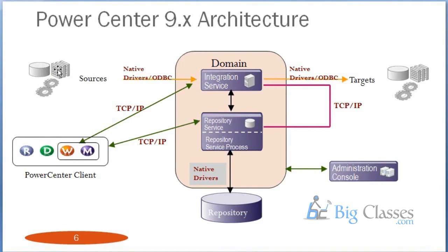For example, if you have an employee table in the source system and an employee_stage table in the target system, and the program is created in the repository database, the Integration Service will understand your instructions — what the source table is, what the target table is, and what transformations are being used. Based on the source connection, it will fire a SELECT statement to read the data from the source system.